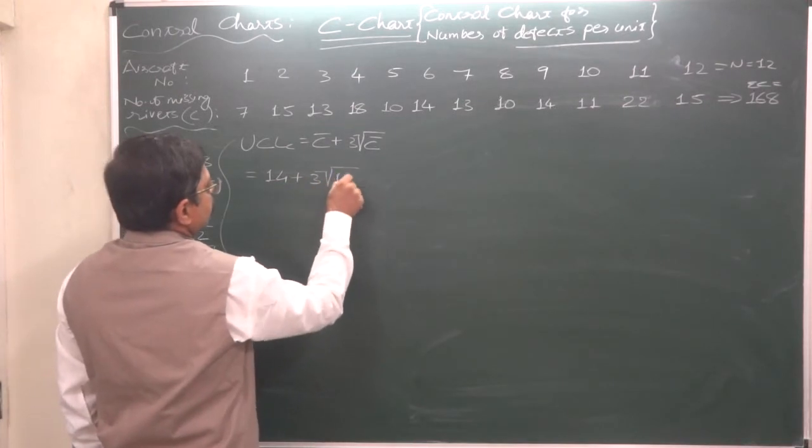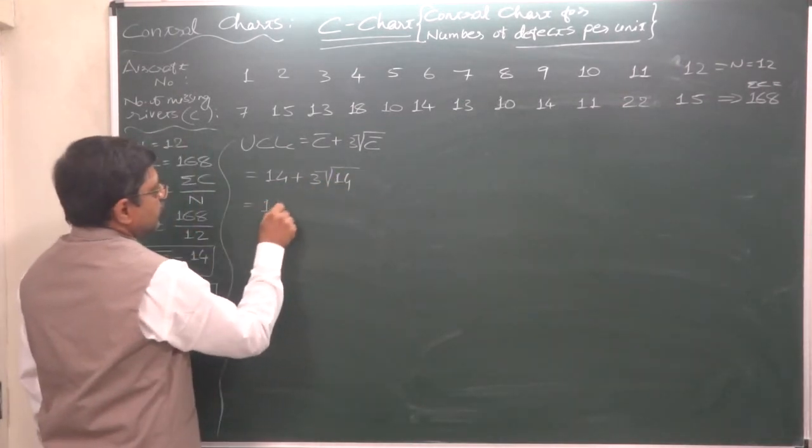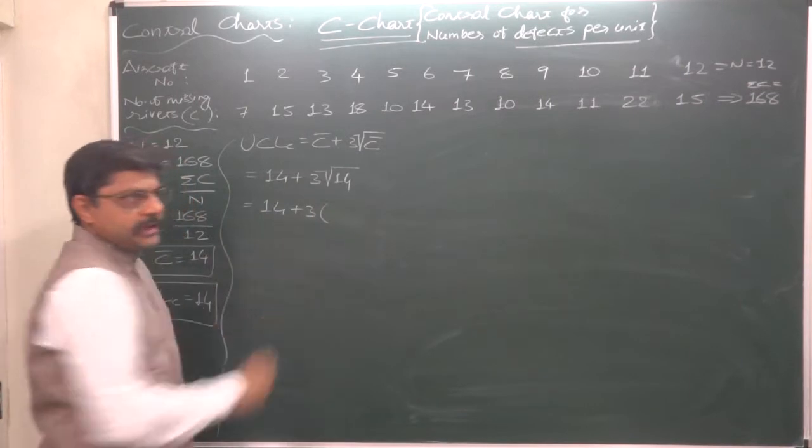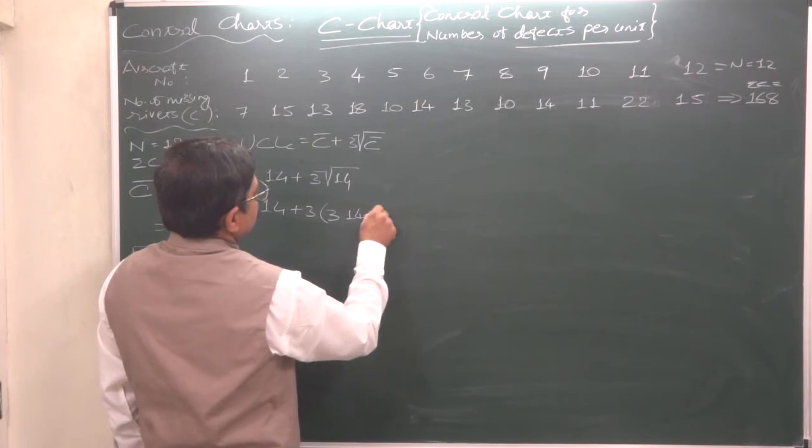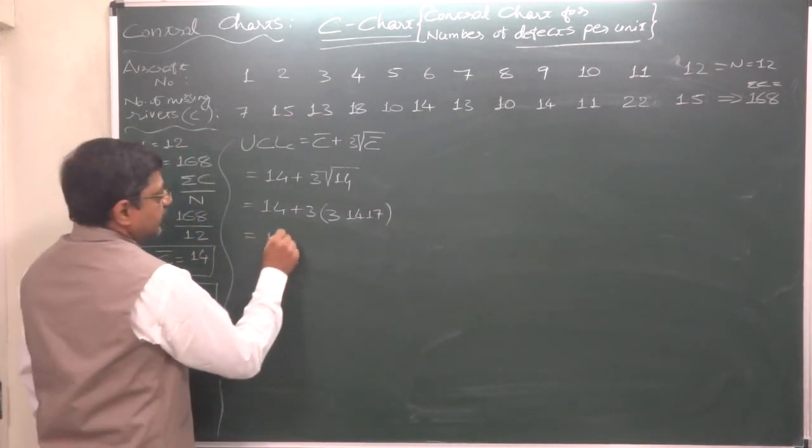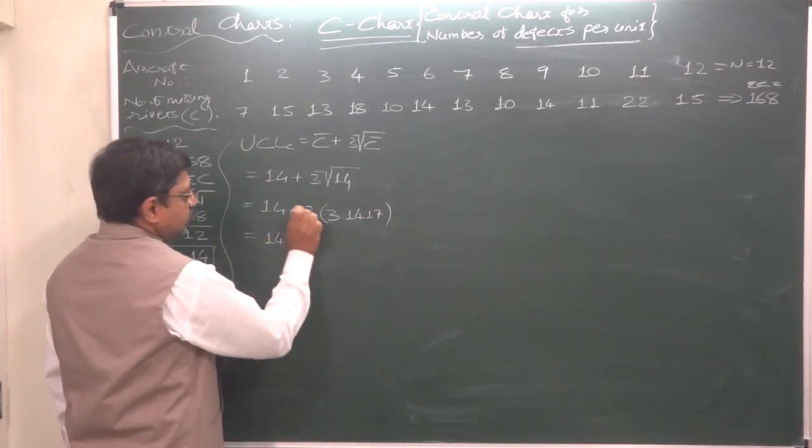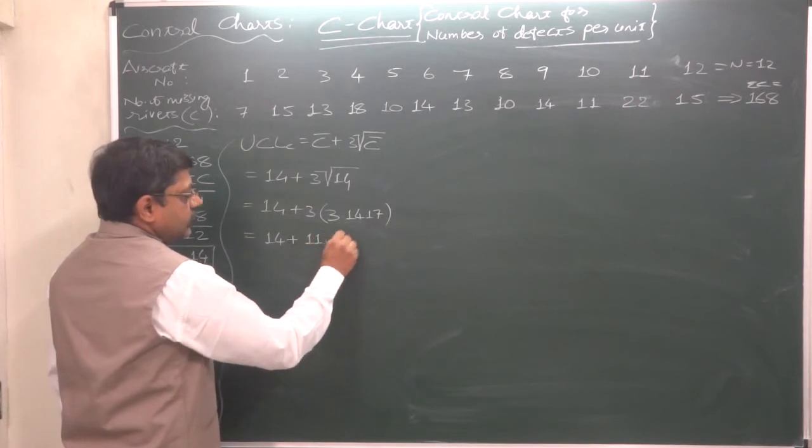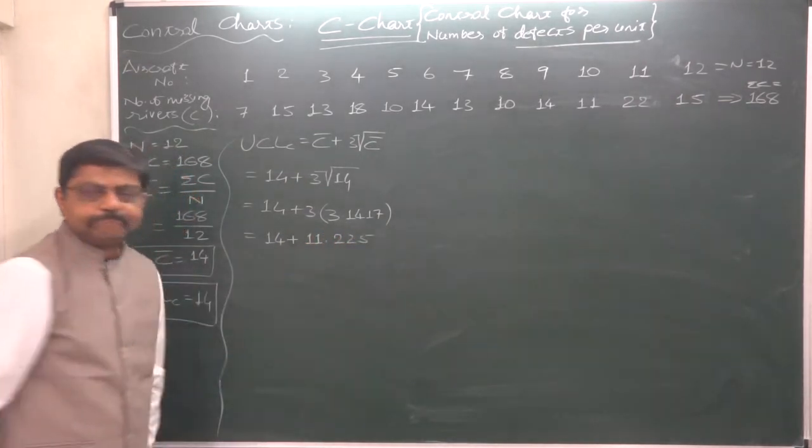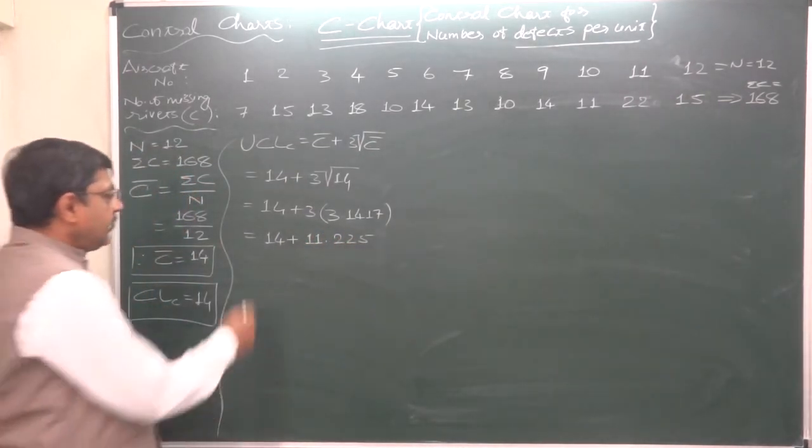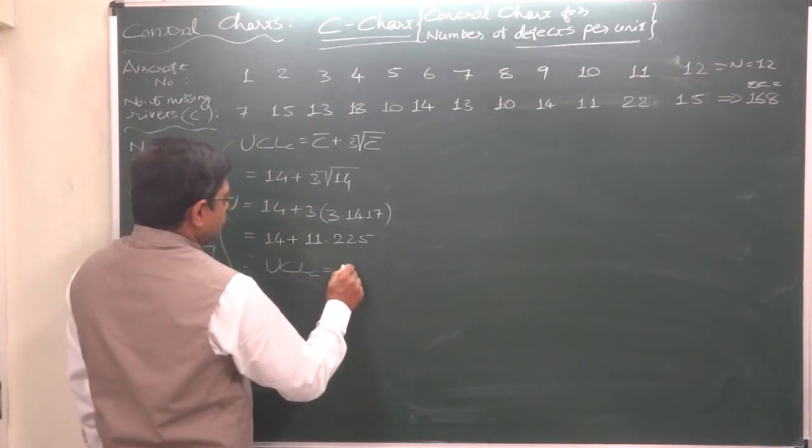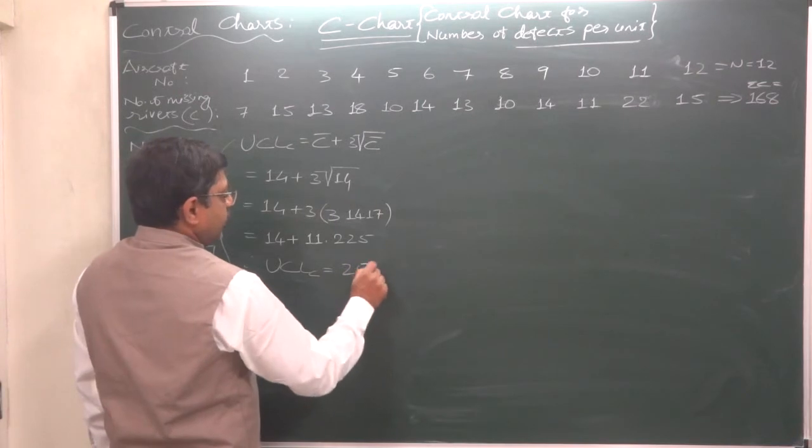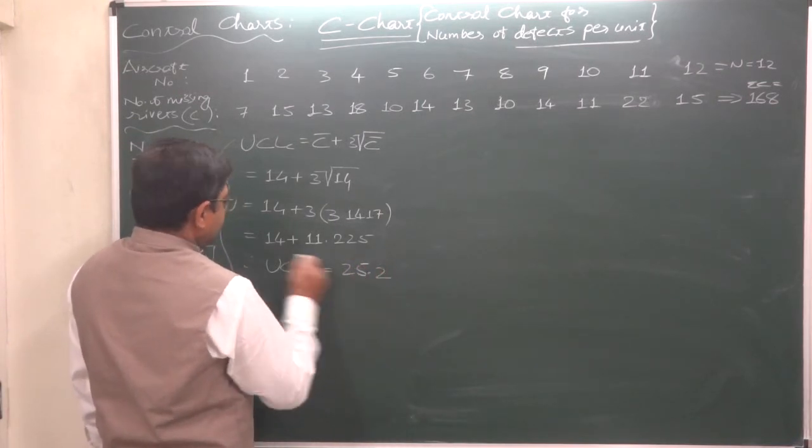The easiest possible formula: 14 plus 3 into under root 14. Now use your calculator to find out the square root of 14, and it comes to 3.1417, multiplied by 3, so it will be approximately 11.225. Therefore, upper control limit of C chart comes to 25.2.